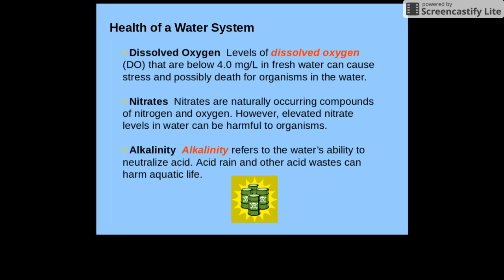There are certain things you need for a healthy water system. One is dissolved oxygen (DO) levels, which need to be above four milligrams per liter in fresh water — if they're not, it can cause stress and possibly death for organisms in the water. Nitrates are naturally occurring compounds of nitrogen and oxygen, but elevated nitrate levels in water can also be harmful to organisms. Alkalinity refers to the ability to neutralize acid in water.